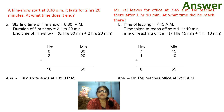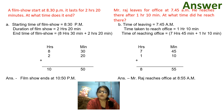Next question: Mr. Raj leaves for office at 7:45 a.m. He reaches there after 1 hour 10 minutes. At what time did he reach there? So, the time of leaving for office is 7:45 a.m., and the time taken to reach the office is 1 hour 10 minutes. You have to find out the time of reaching the office. So add both times — 7 hours 45 minutes plus 1 hour 10 minutes — and your final answer is 8 hours 55 minutes. So you write: Mr. Raj reaches office at 8:55 a.m.